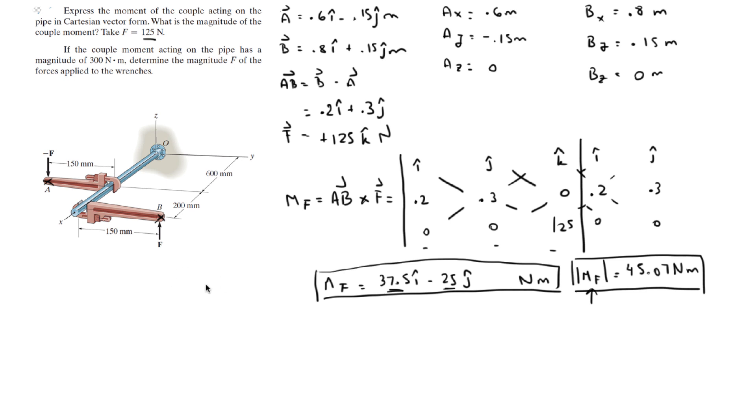Well that's very easy to find actually, because you know that the moment of F is also equal to the force times the magnitude of AB. Now you know that the magnitude of AB is 0.2 squared plus 0.3 squared, all that square rooted, and that equals to 0.36.